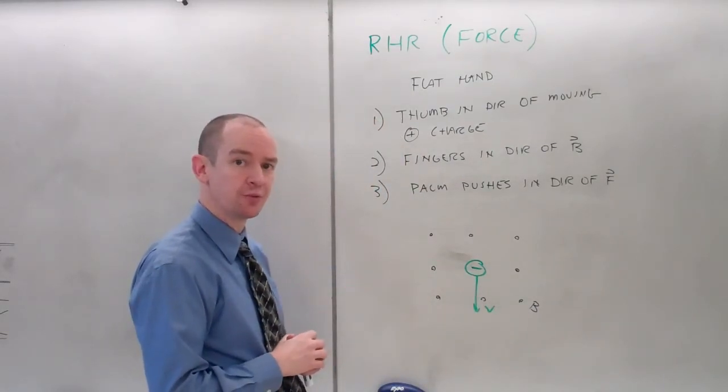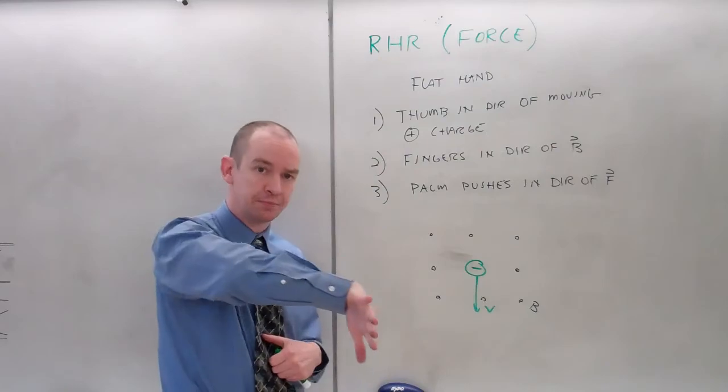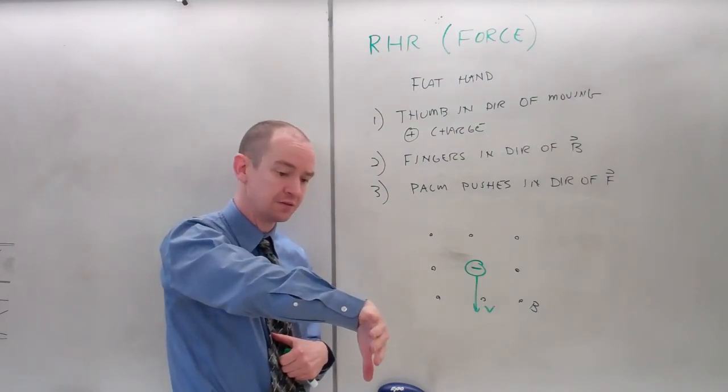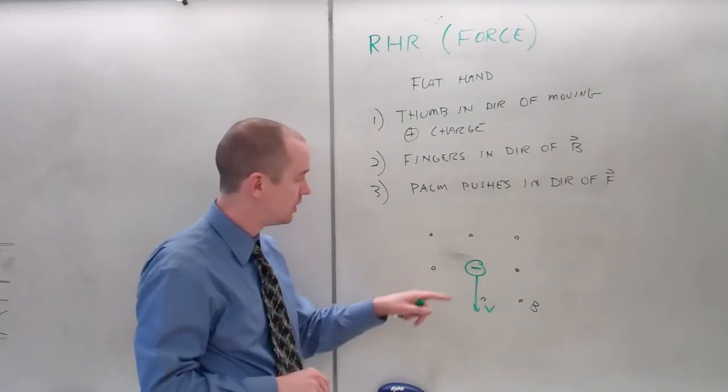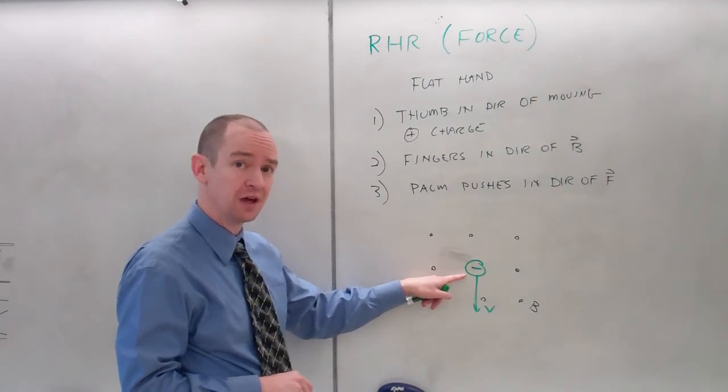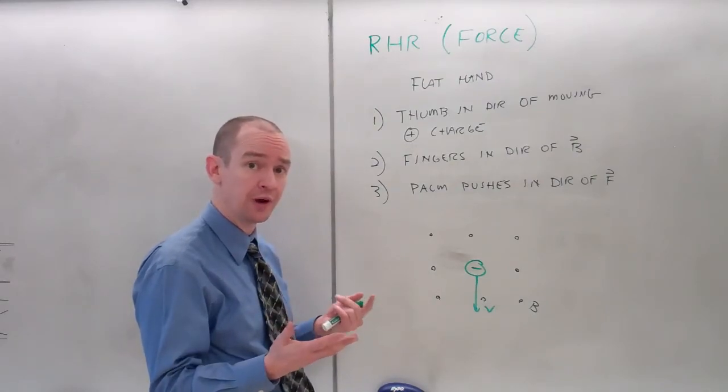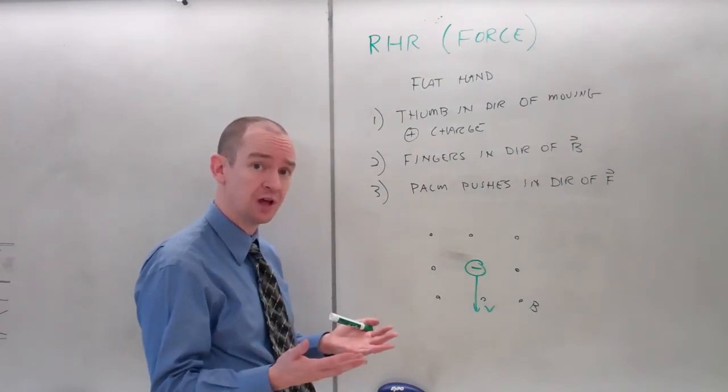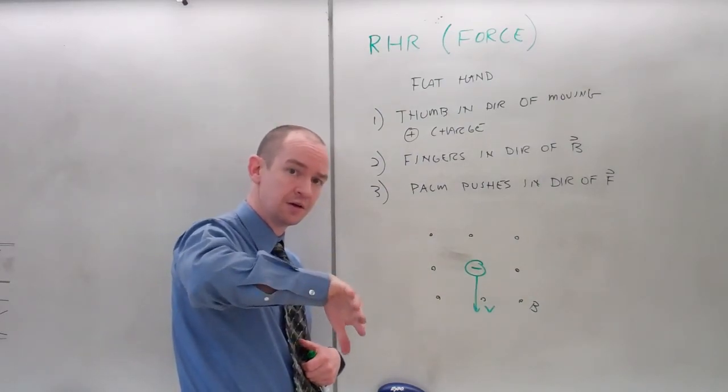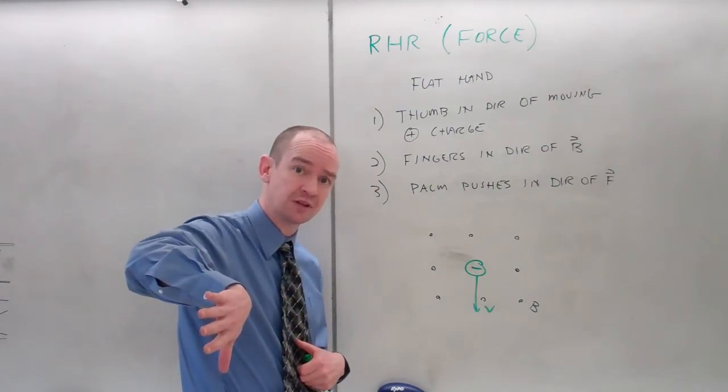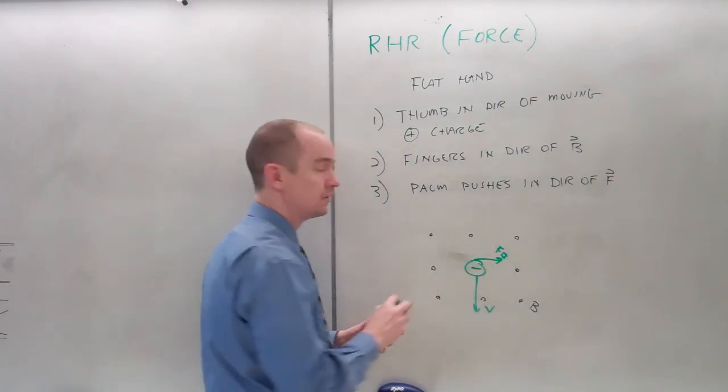Okay, let's try this one. V points in the direction of the moving particle. B points in the direction of field lines. Palm pushes in the direction of the force. However, notice this is a negative charge. It's going to do the exact opposite of whatever a positive charge would do. Therefore, I'll find what happens using the right hand rule and just flip the direction at the end. V, B, palm pushes, but it's an electron, so the force must be in that direction.